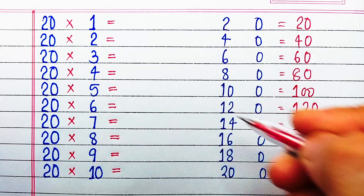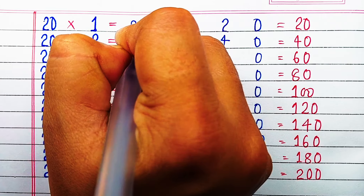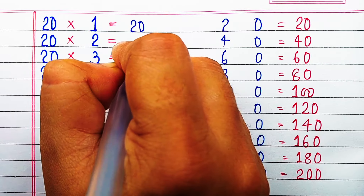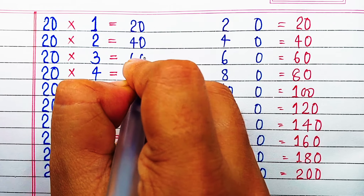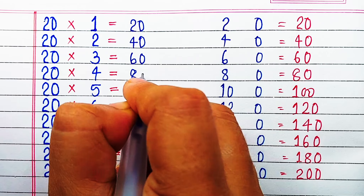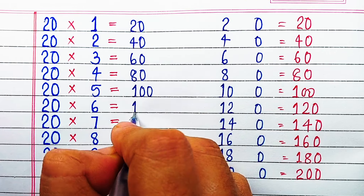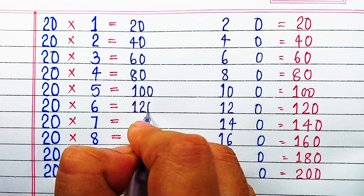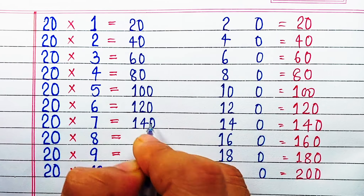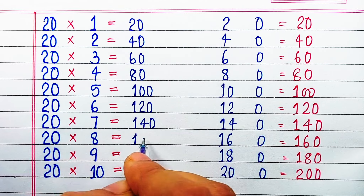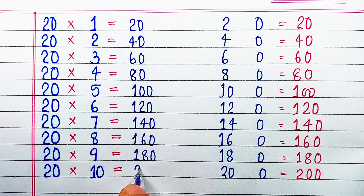Now let's start writing the table of 20: 20×1=20, 20×2=40, 20×3=60, 20×4=80, 20×5=100, 20×6=120, 20×7=140, 20×8=160, 20×9=180, 20×10=200.